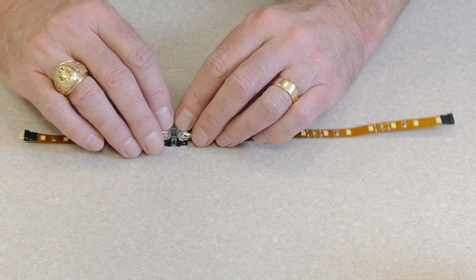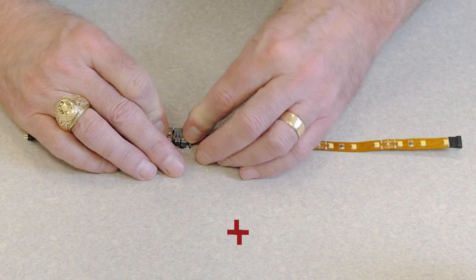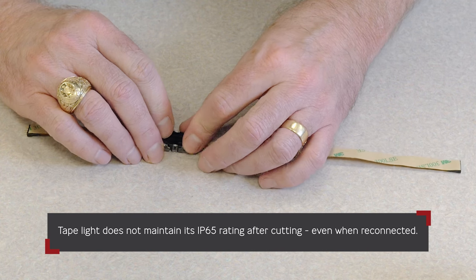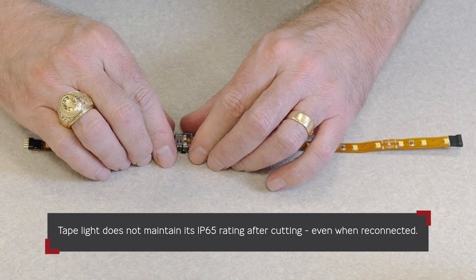Now, press the tab down tightly. The sharp grooves should pierce up through the bottom of the strip and through the copper pads, making a solid connection.